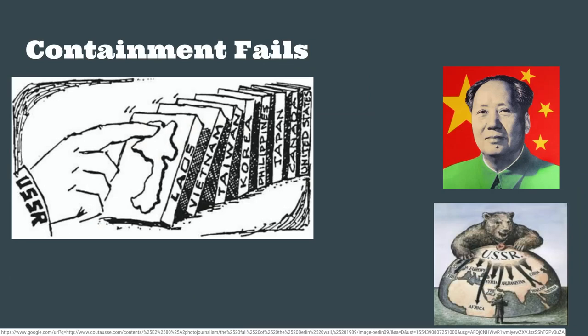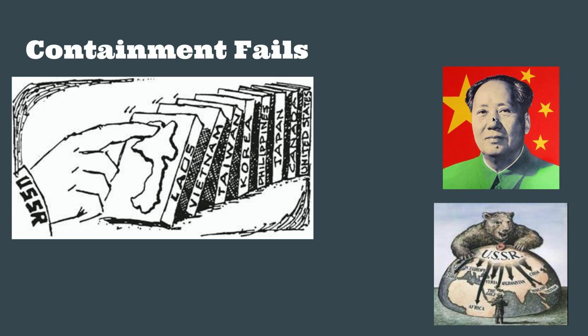Containment was the policy issued by Harry S. Truman after World War II — we have to try to contain communism — but containment begins to fail. The first country that shows containment is failing, mainly in Asia, is going to be China. China becomes a communist nation in 1949, led by Mao Zedong. He is going to lead the communists in China for their eventual takeover, and this marks the idea that containment is not working.